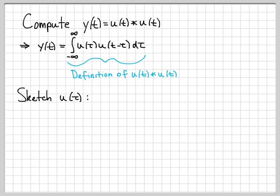To evaluate the convolution integral, we need to know what the individual pieces of the integrand look like. So we need to know what u of tau looks like, and we need to know what u of t minus tau looks like. Let's sketch each one of those individually.